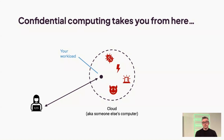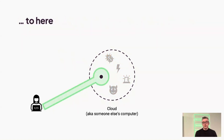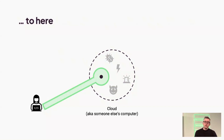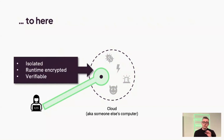Confidential computing addresses this by keeping your workload encrypted and isolated from the infrastructure, essentially shielding it from infrastructure threats, and making everything verifiable so that you know your workload is secure and that precisely your workload is running. Then you can set up a secure connection, upload your data, download your data, and know everything is private. That's the ideal case, and this is what confidential computing can achieve.